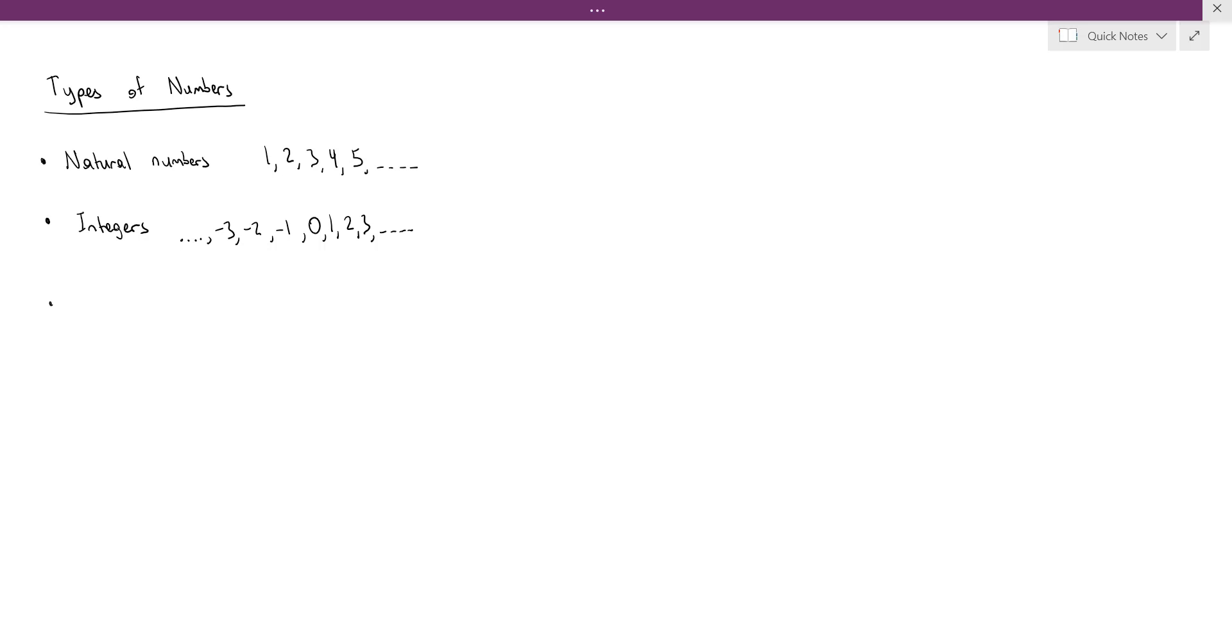We also have rational numbers. So, what is a rational number? A rational number is any ratio of two integers. Some examples of rational numbers would be 13 over 28, negative 123 over 57, etc. Any ratio of two integers would be examples of rational numbers.